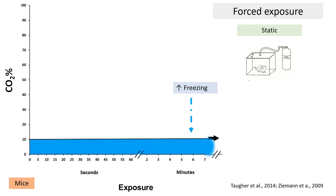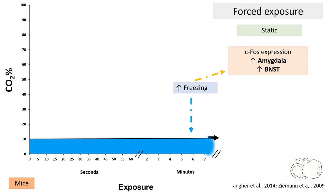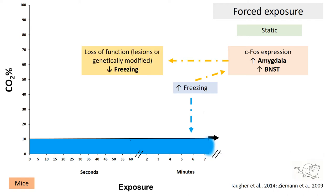Forced exposure to 10% static CO2 also elicits freezing in mice. Freezing responses due to CO2 exposure are associated with an increase in C-FOS expression in the amygdala and in the bed nucleus of the stria terminalis, both involved in the induction and execution of negative emotional responses. In addition, the loss of function due to lesions or genetic modifications decreases freezing due to CO2 exposure.